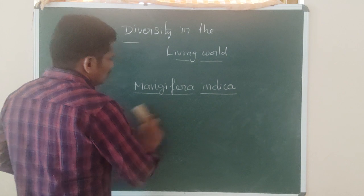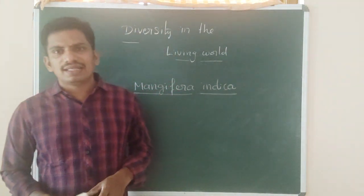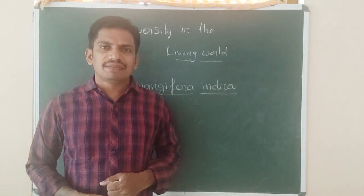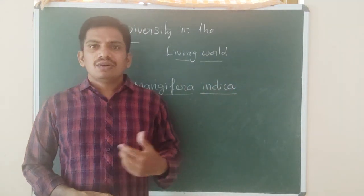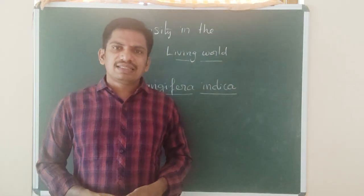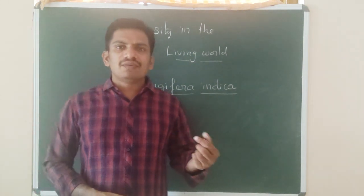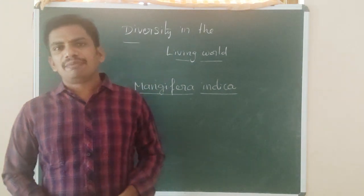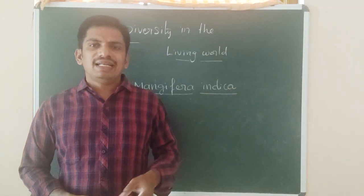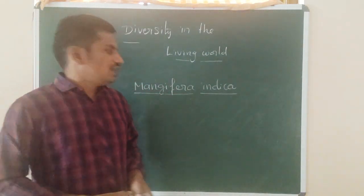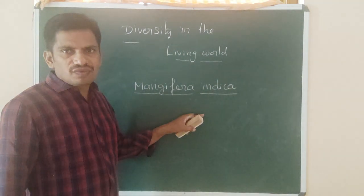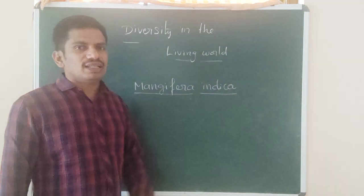For example: Mangifera indica, Saraka indica, Azadirachta indica, Triticum vulgare. Triticum aestivum is the wheat plant. Pisum sativum is the beans, and Oryza sativa is the rice or paddy. These scientific names have two names, should be written in italic font, and while writing by hand should be underlined separately.